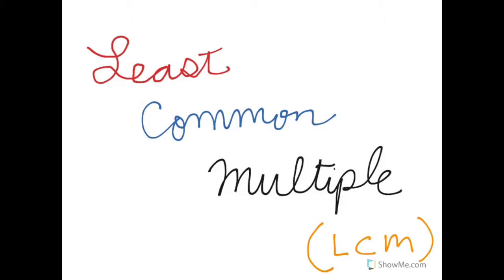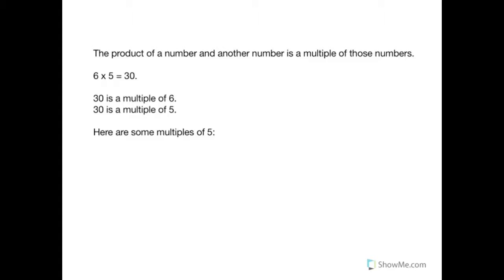Okay, everybody, today we're going to talk about least common multiple. The product of a number and another number is a multiple of those numbers. For example, six times five gives you thirty. Thirty would then be a multiple of six.